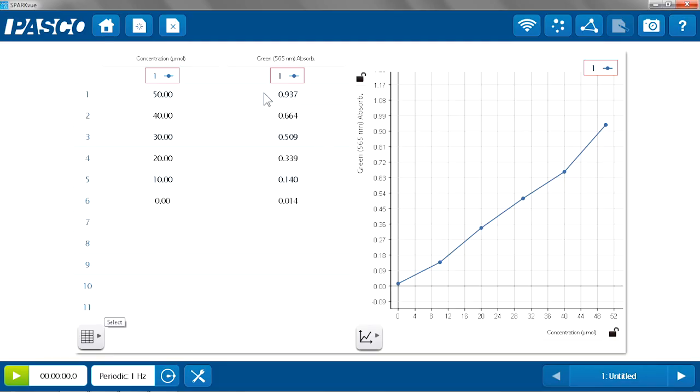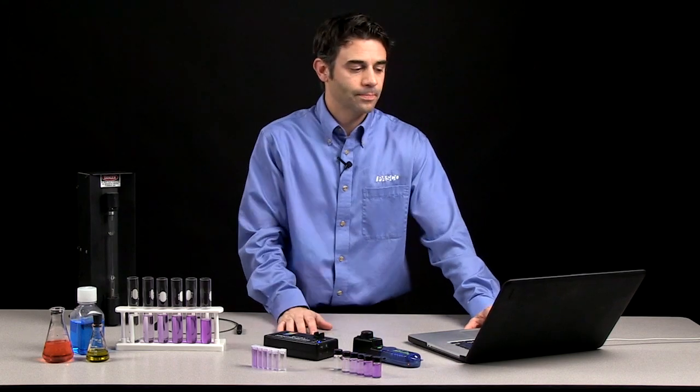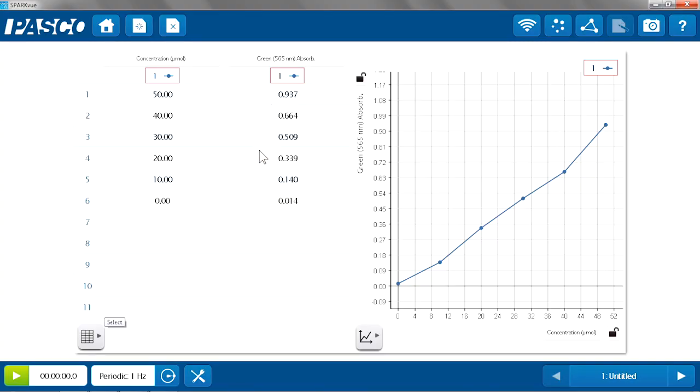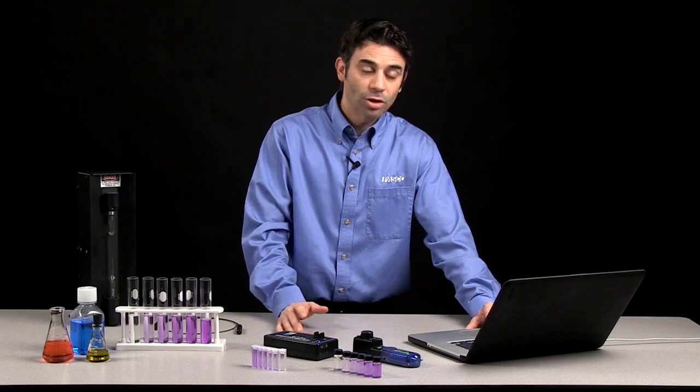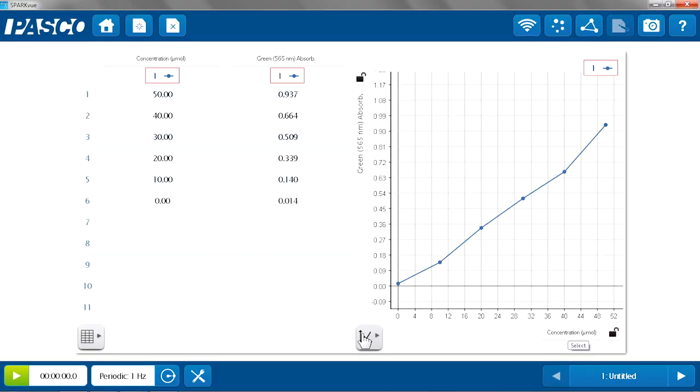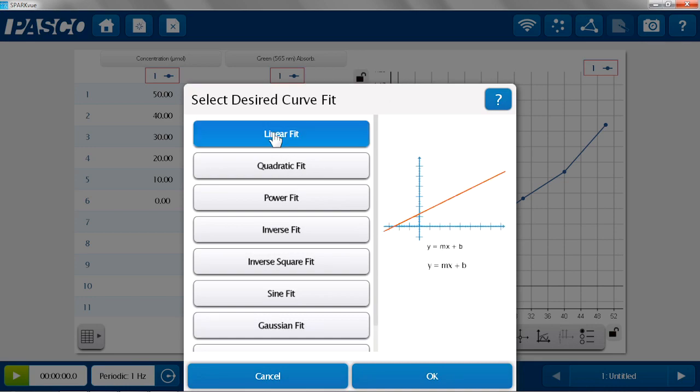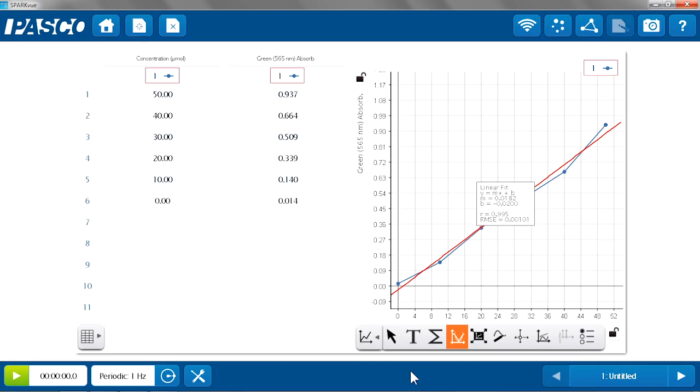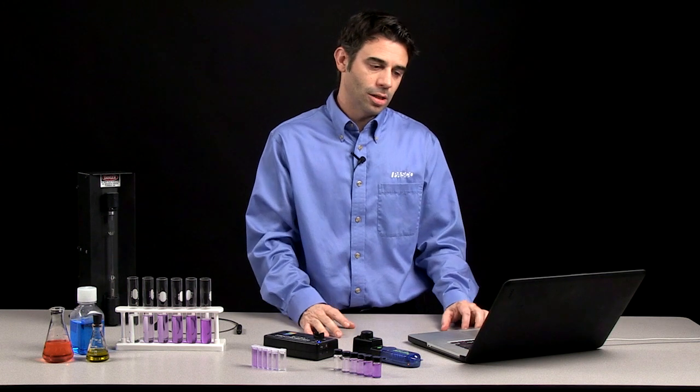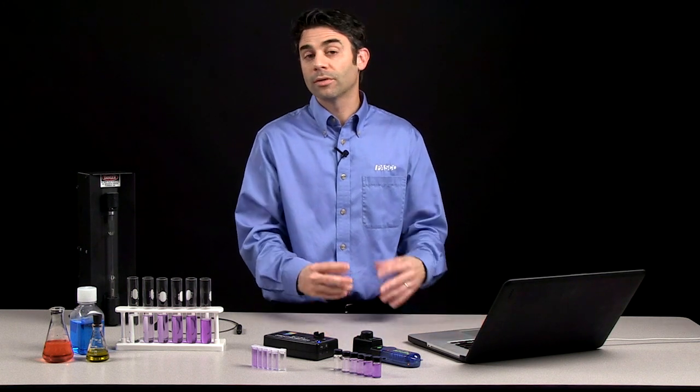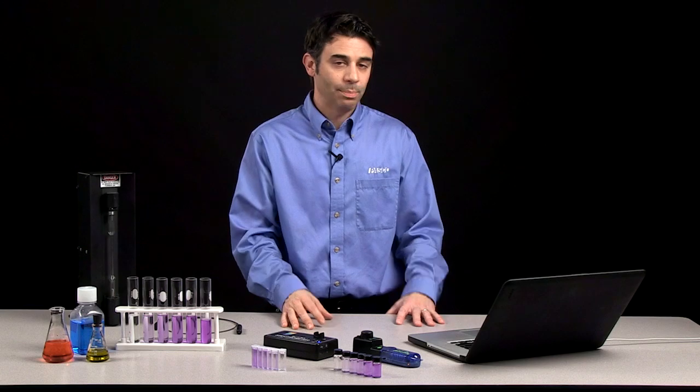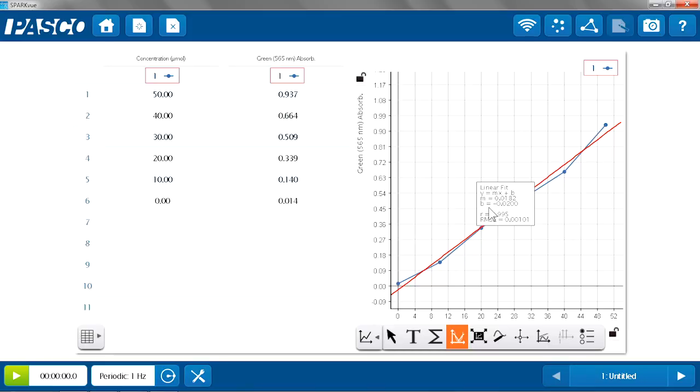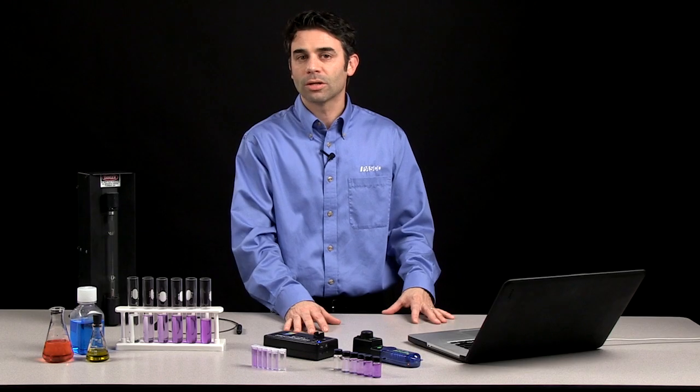And I keep the values, my absorbance values for each of those known standards. And as I keep those in the table, the graph will automatically populate, and I can see this relationship between absorbance and concentration. To further quantify that relationship, I can use my graph tools like my linear fit. And I can apply that fit to the data. And then the students can measure the absorbance of an unknown sample of crystal violet. And based on the graph and their fit, they can determine the concentration of that unknown.